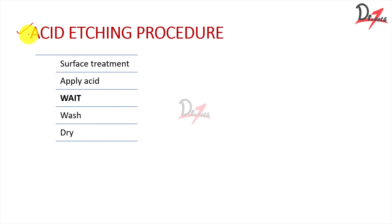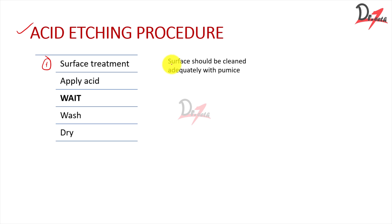Let us look at the acid etching procedure. We cannot just apply the acid and leave it for any amount of time — we have to follow certain guidelines. The first step is surface treatment: the surface should be cleaned adequately with pumice, because if we have oils or other organic components, they will prevent the etchant from properly etching the enamel. We need the enamel to be clean.